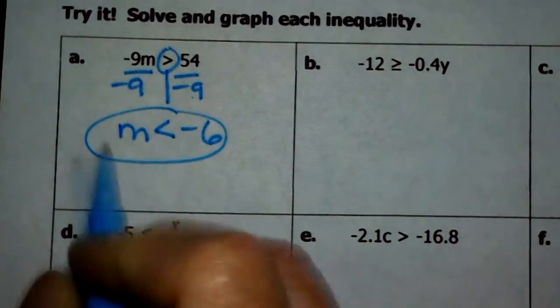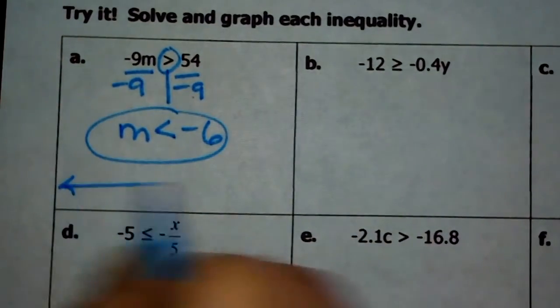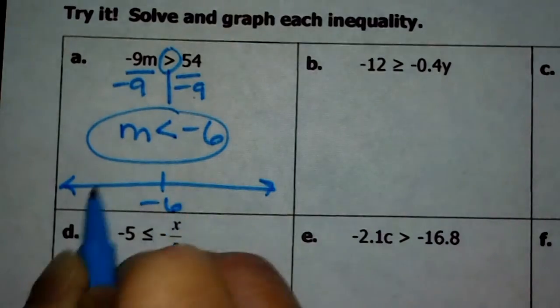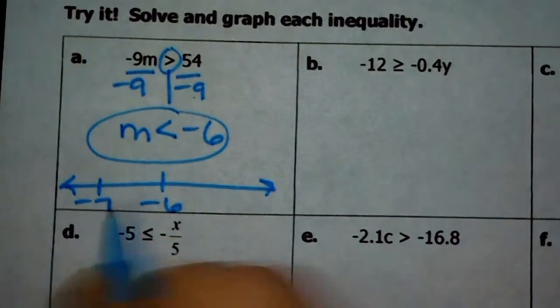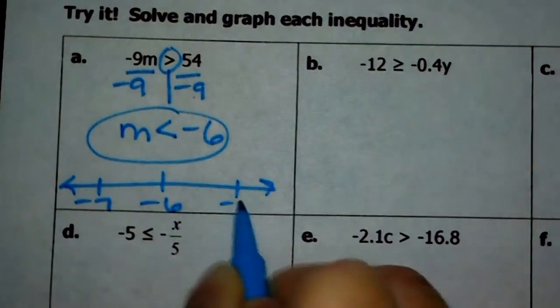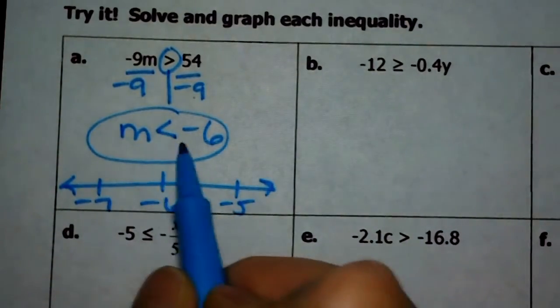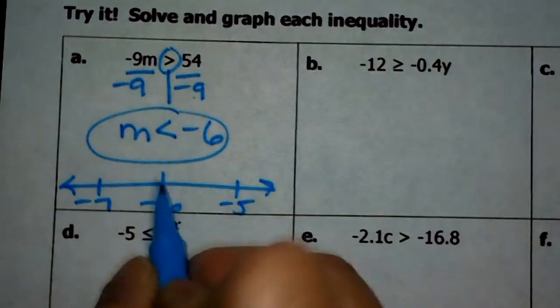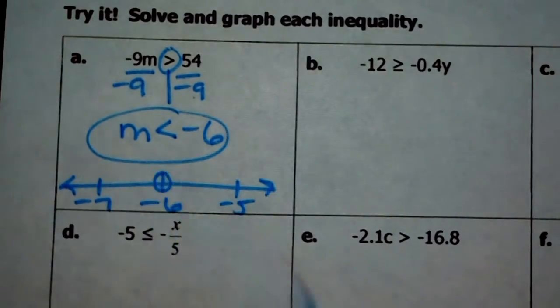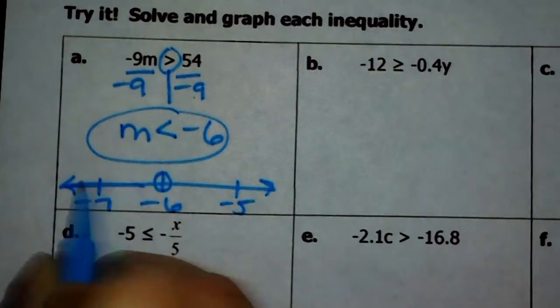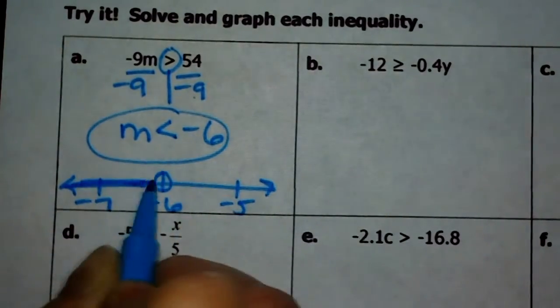Circle your answer and make your graph. Negative 6 is in the center. I have negative 7 and negative 5. If m is less than negative 6, it can't be negative 6 — it can only be less.